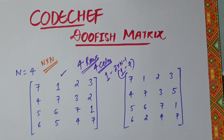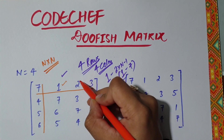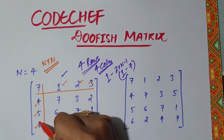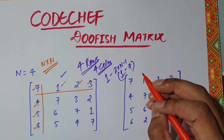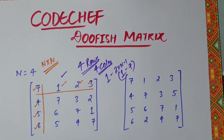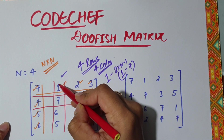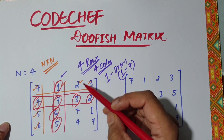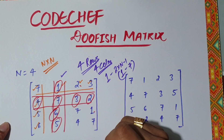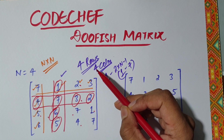Let's check if this matrix follows that property. For the first row and first column, we have 1, 2, 3, 4, 5, 6, 7 — all seven elements are present. Now let's check the second row and second column: again we have 1, 2, 3, 4, 5, 6, 7. Similarly for the third row: 1, 2, 3, 4, 5, 6, 7.